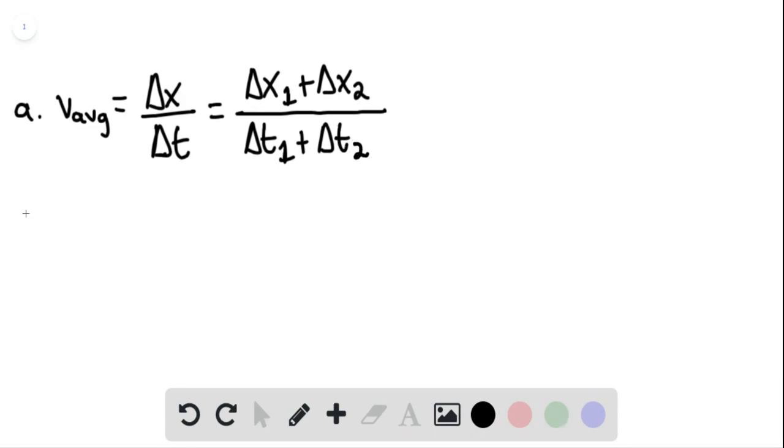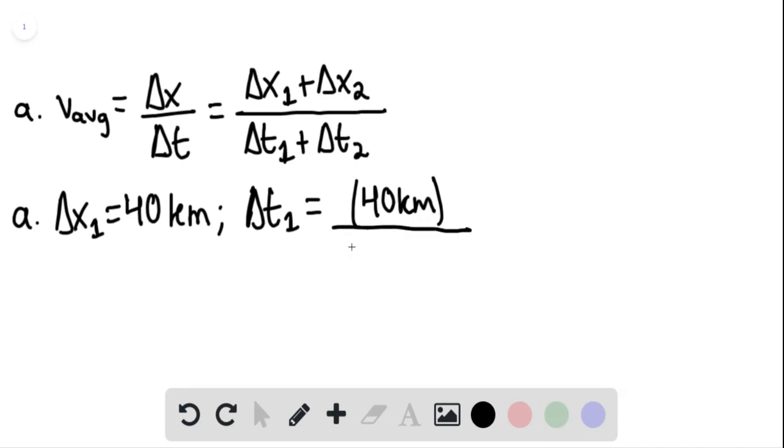So we can then say that for the first part of motion, for part a, the displacement delta x sub 1 is equaling 40 kilometers. Now, the time taken would essentially be t sub 1, or delta t sub 1, and this would be equaling to 40 kilometers. And then we're traveling at 30 kilometers per hour. So this is equaling 1.33 hours.